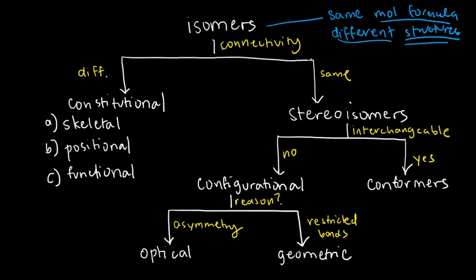The first concept we need to address is connectivity, which I'll return to after discussing constitutional isomers. If we have different connectivities, there are three possible options: skeletal isomers, positional isomers, or functional isomers. But if the connectivity is the same, then we have what we call stereoisomers.